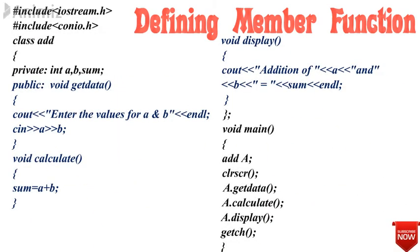Here is another example where we have defined member functions inside the class. The class name is add, with data members A, B, and sum, and member functions get_data, calculate, and display. You can observe that all three member functions are defined inside the class. Once the display function is written, the class is closed after it, and all three member functions are called in void main. Note that while defining a class member function inside the class, we do not use scope resolution or the class name before the member function.